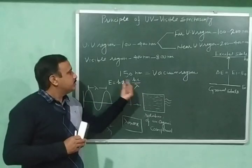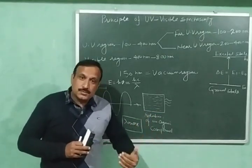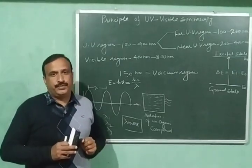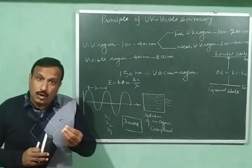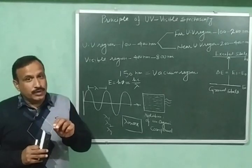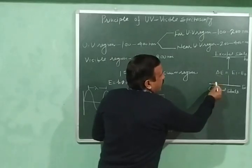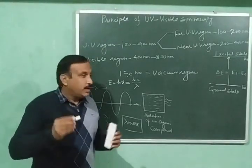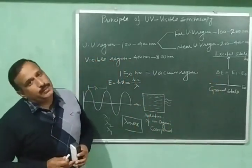And hν is further equal to hc/λ. When this radiation is passed through the solution of an organic compound, the photons present in the radiation collide with the molecules of the organic compound. Not all collisions lead to absorption of energy. Only those collisions where the energy of a photon exactly matches the energy difference ΔE = E1 − E0 will result in the absorption of a photon.